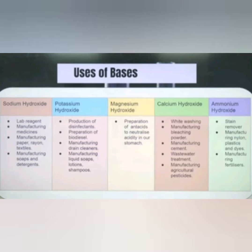Ammonium hydroxide is used in window cleaners, it is also used to remove stains, and it is used in manufacturing nylon, plastics, and dyes. It is also used in fertilizers. The next part will continue in the next slide.